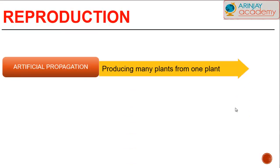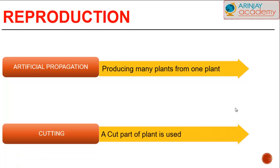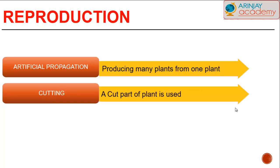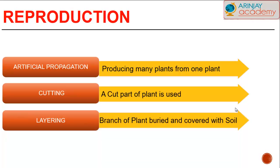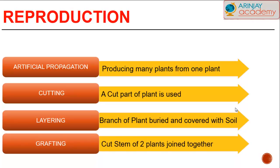Artificial propagation is producing many plants from one plant by man-made methods. Cutting is when a part of a plant is cut and used to grow a new plant. Layering is when a branch of a plant is buried in the soil and later grows into a new plant. Whereas grafting involves two plants that have been cut and their stems joined together.